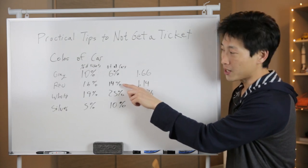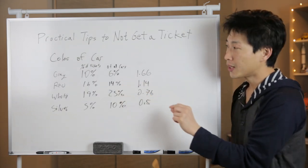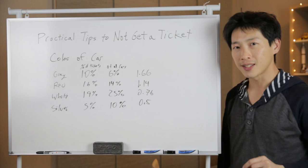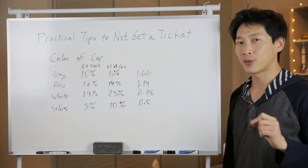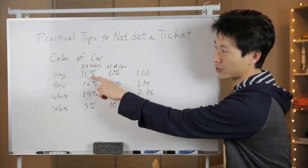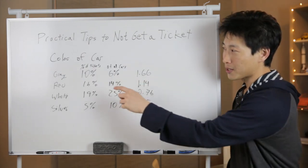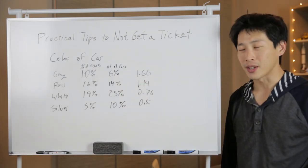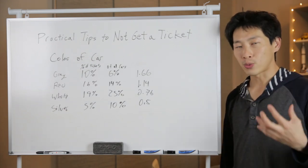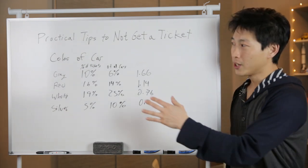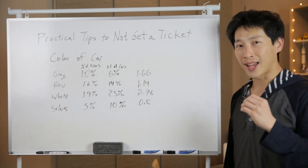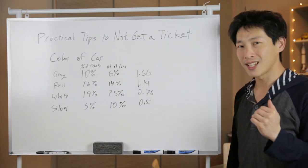Then that would mean that gray color would get ticketed 6% of the time. The red one, it would get ticketed 14% of the time and so on. However, here are the percentage of tickets that actually were given for that kind of car. It's actually 10%. You have 6% in the road somewhere, but somehow it gets ticketed 10%.